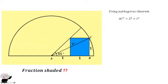You have AC² equals 2² plus 1². So 2² plus 1². And AC², which is the same as r², is equal to 5.